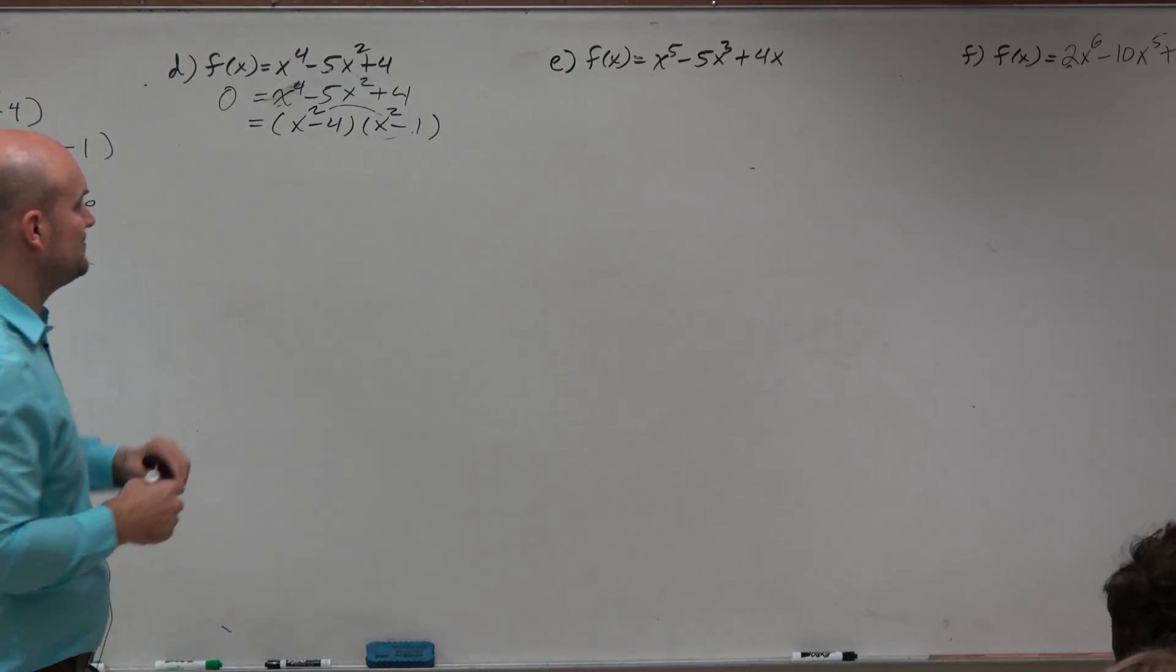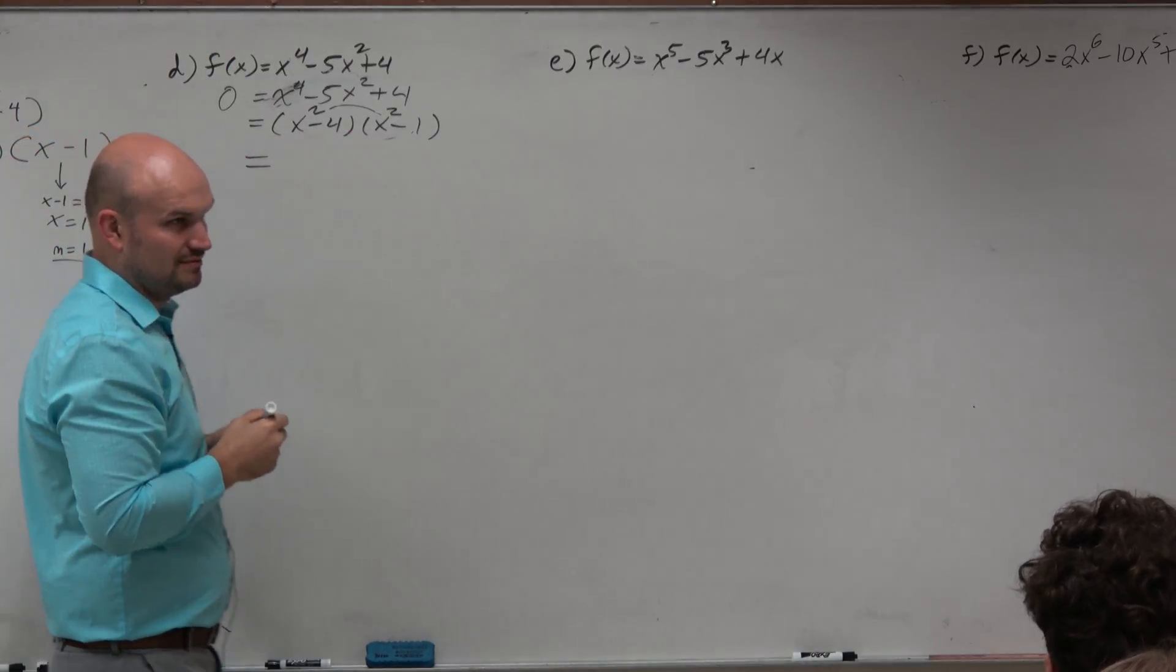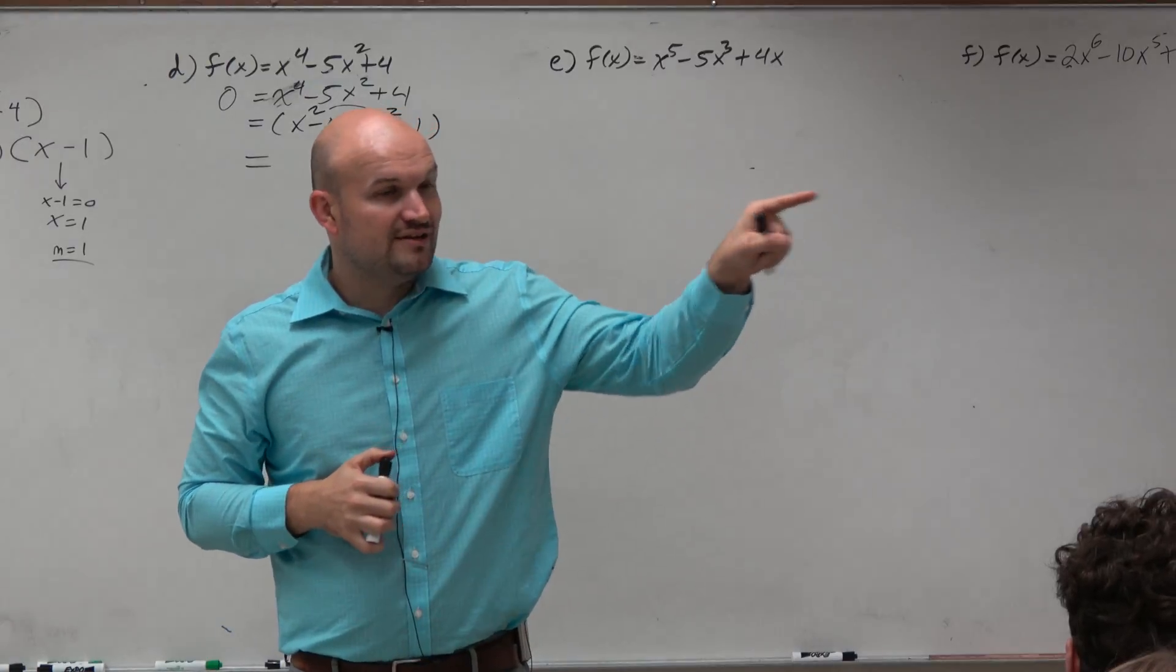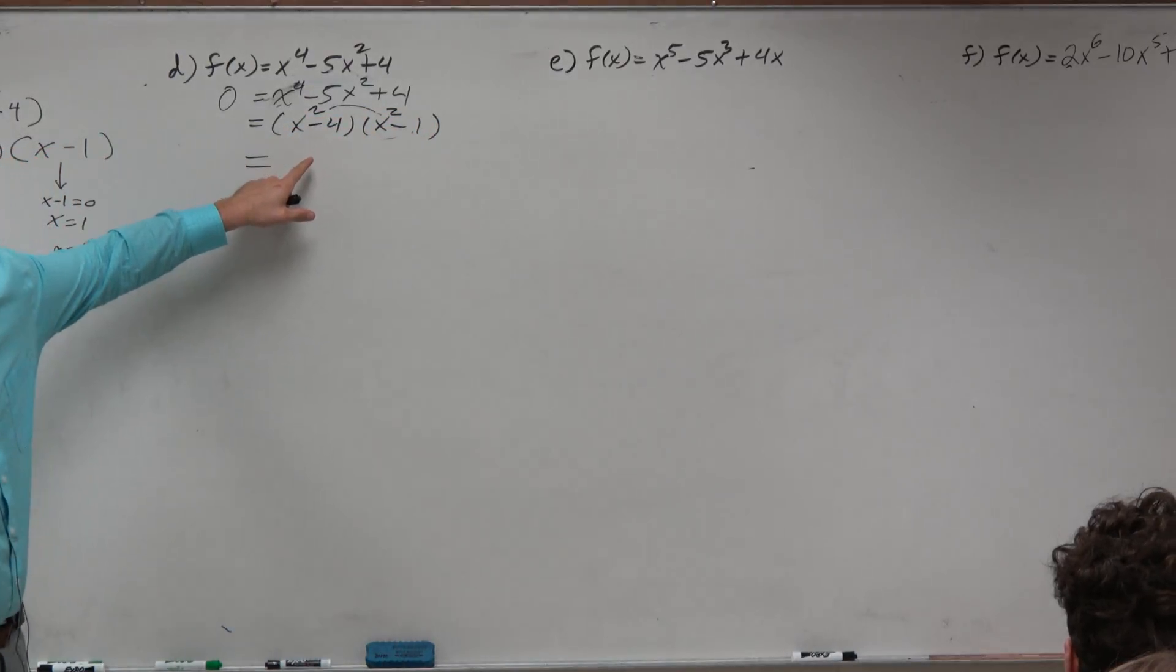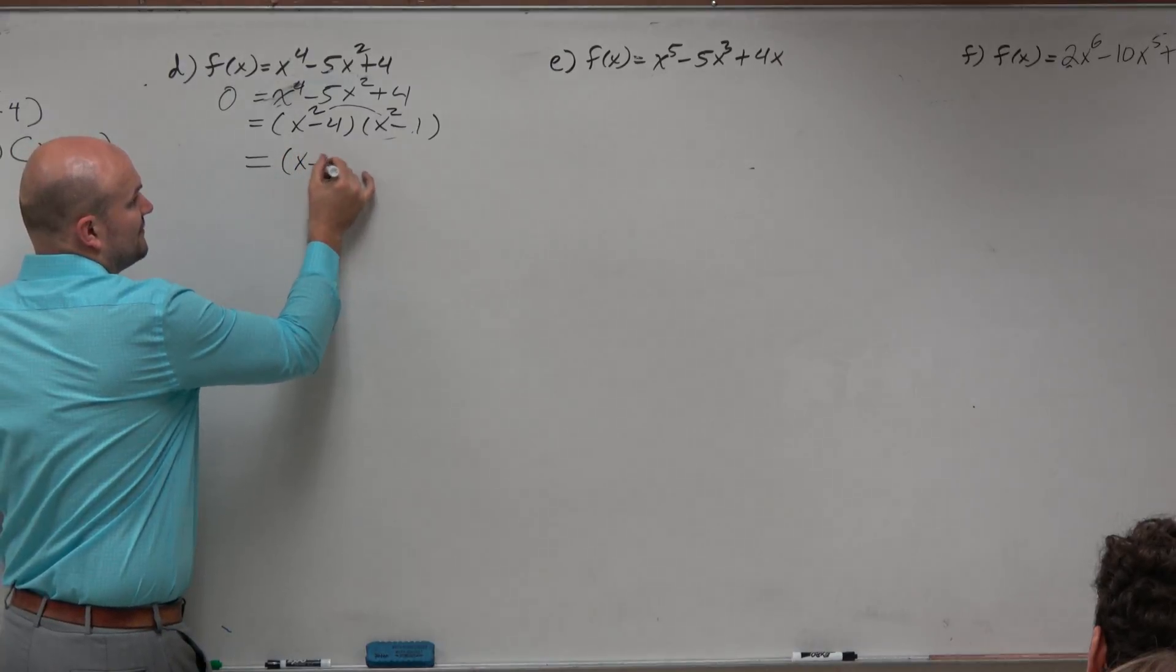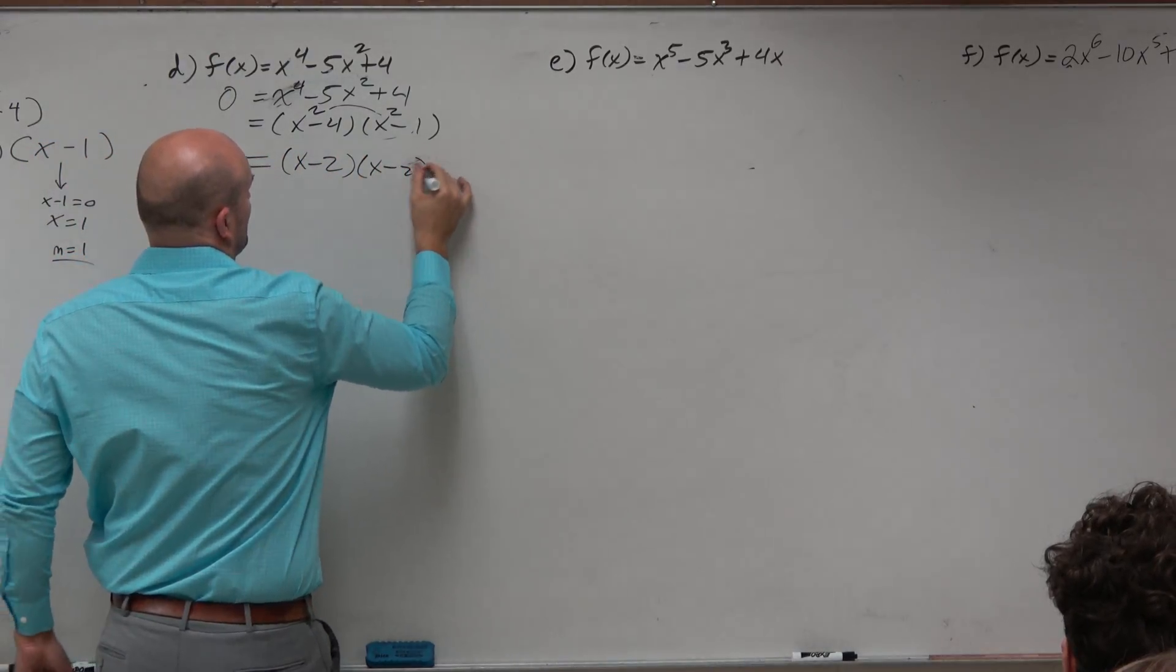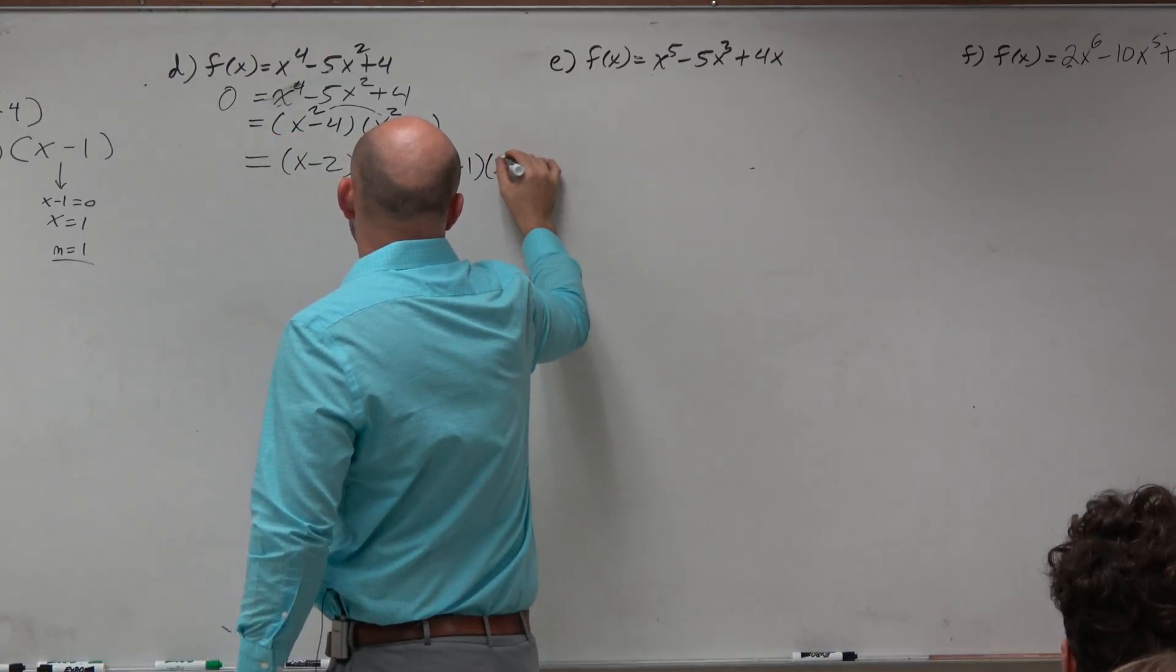You could use this zero product property from here. But I think what would be best is we can further factor these down, right? We can continue to factor x squared minus 4, correct? And that can be factored into difference of two squares. And this can be factored x minus 1 times x plus 1.